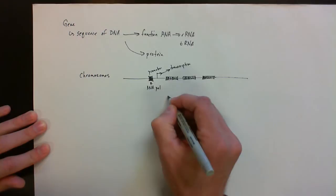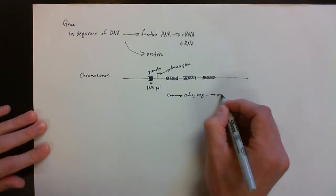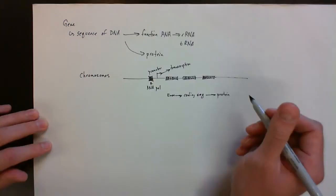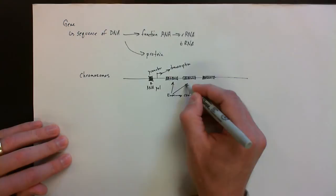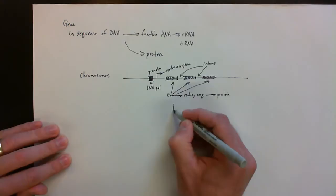So exons are going to lead to the coding sequence, or the other way of saying that is the sequence that will become the protein. Basically, it's what's going to be read in terms of RNA that will then be read into the sequence of amino acids. So here in the black are going to be what we call the exons, and introns are going to be what's going to be thrown away. So after transcription, what we normally see